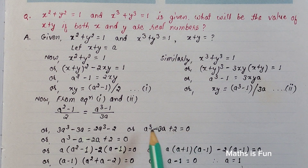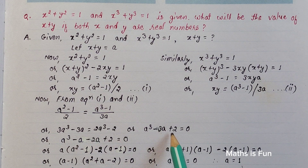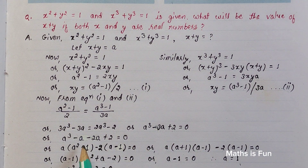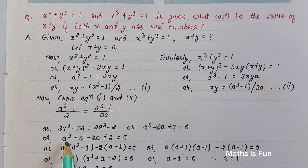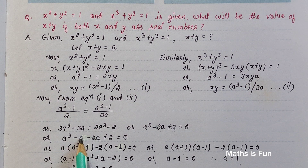Now we factorize a³ - 3a + 2 = 0. We split -3a into two parts such that their product relates to 2 and their sum is -3. Since 2×1 = 2 and 2+1 = 3, we use -a and -2a. So -3a = -a - 2a, giving a³ - a - 2a + 2 = 0.